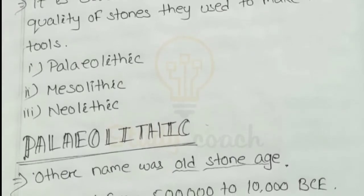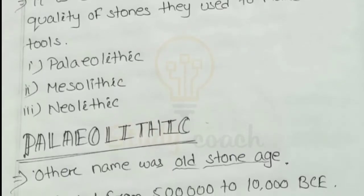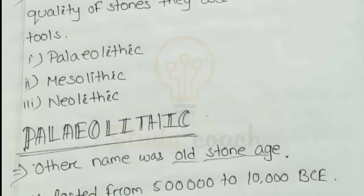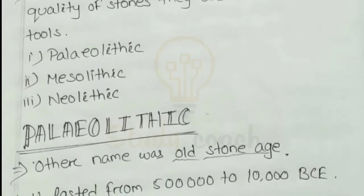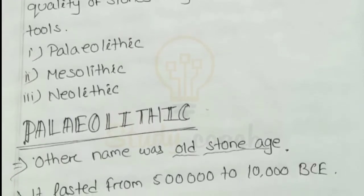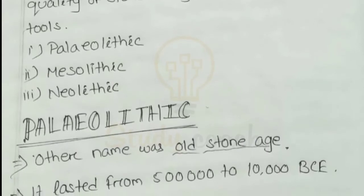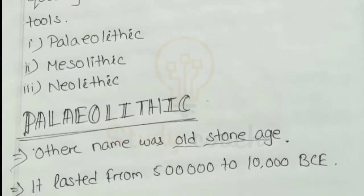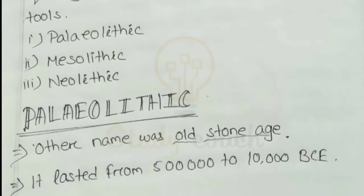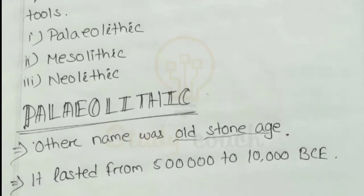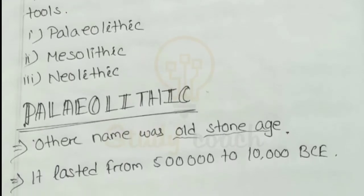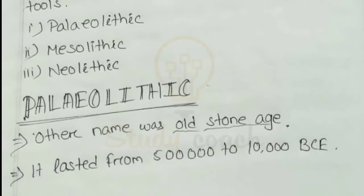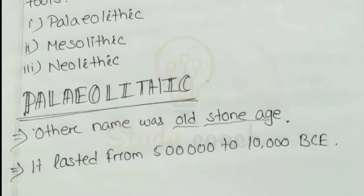First, we discuss about the Paleolithic. 'Paleo' means old, and 'lithic' means age — so it is called the Old Stone Age. It lasted from 5,000 to 10,000 BCE.